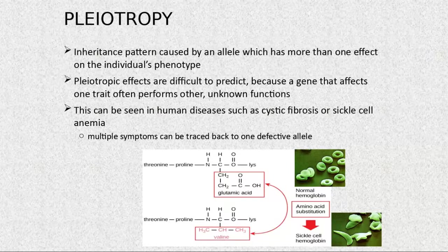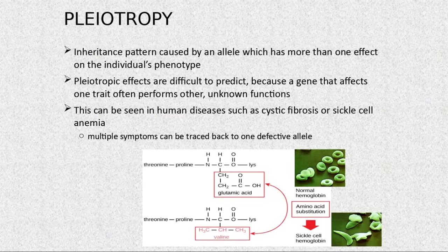The pleiotropic effects are very difficult to predict because the gene that affects one trait often performs other unknown functions.